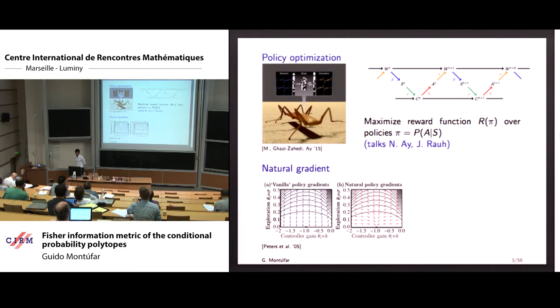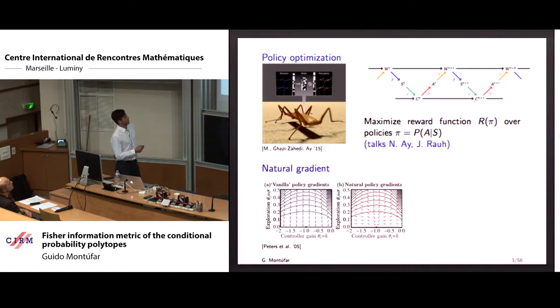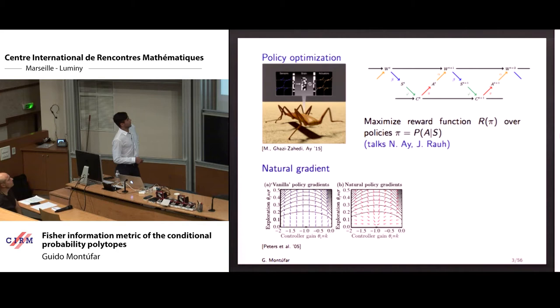So why do we care about this? The Fisher metric has been studied a lot in the context of probability simplices, and now we want to talk about conditional probabilities. The application already came up in Nihat Ai's talk — we have this sensory motor loop where we want to maximize a reward as a function of a policy, and a policy is a conditional probability distribution. We have a neural network producing conditional probability distributions, and we want to optimize the behavior. It has been observed that the natural gradient works efficiently in learning — the gradient flow is really different for the Euclidean gradient versus the Fisher gradient, and this can lead to faster learning.